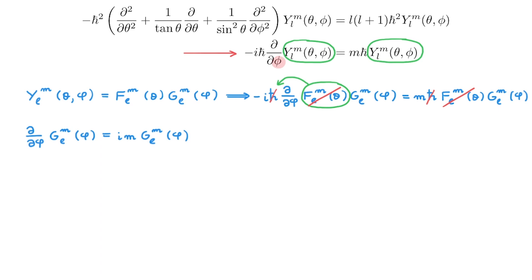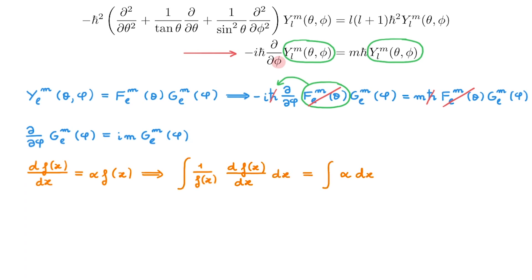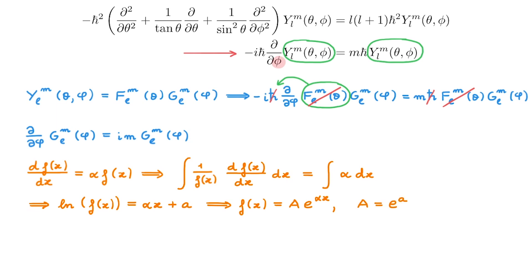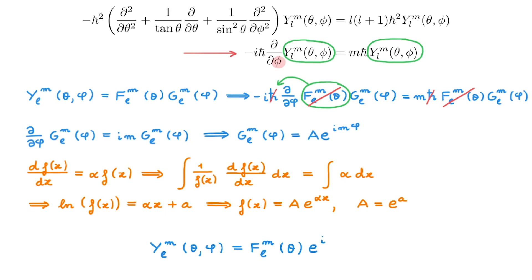This is now a differential equation for the function g of a single variable phi. It has the standard form df/dx equal to alpha f of x for constant alpha, which can be solved by separation of variables. Integrating both sides gives the logarithm of f equal to alpha x plus an integration constant, and exponentiating gives f of x equal to a times e to the power alpha x. Using this solution, we find that g_lm of phi is equal to some constant a times e to the power i m phi. We can therefore write the angular eigenfunction Y as equal to f of theta times e to the i m phi.